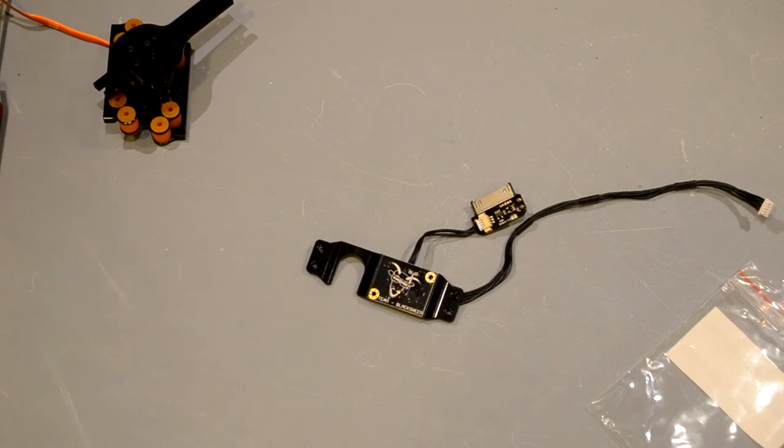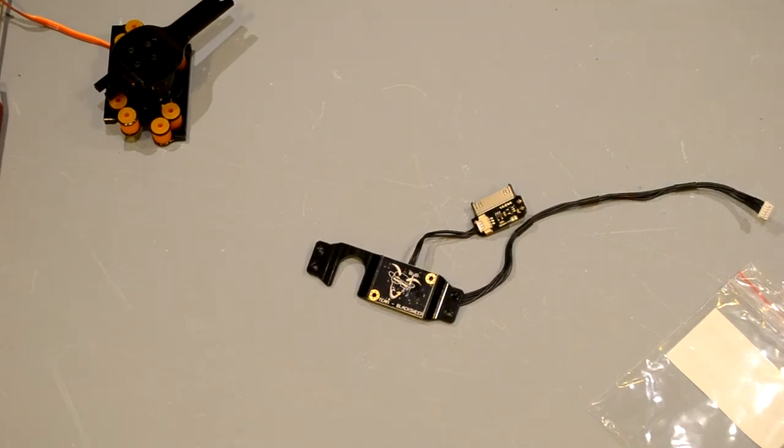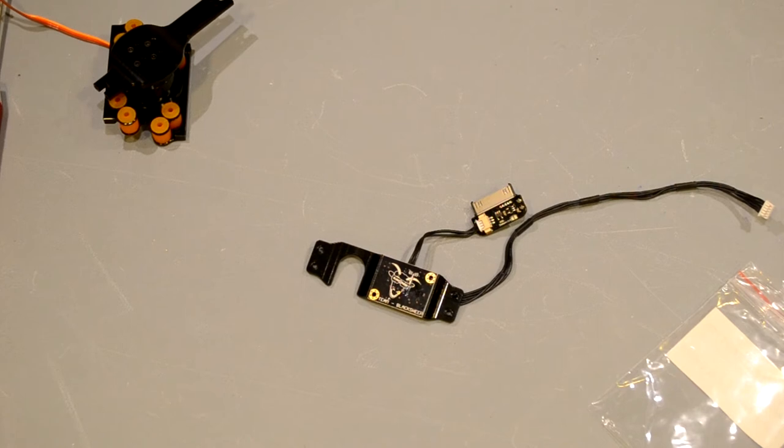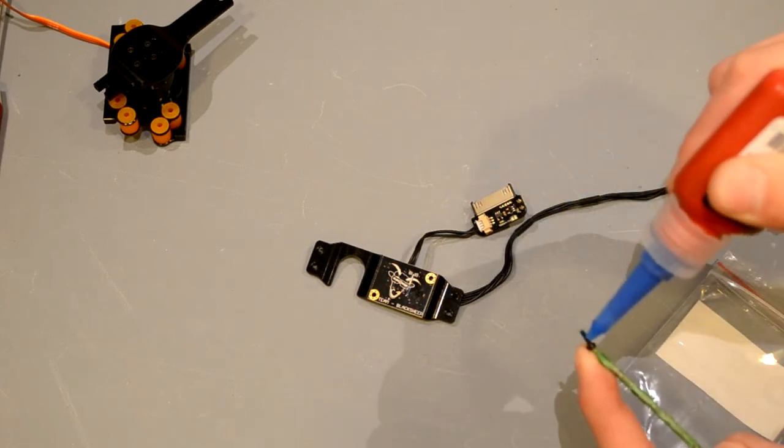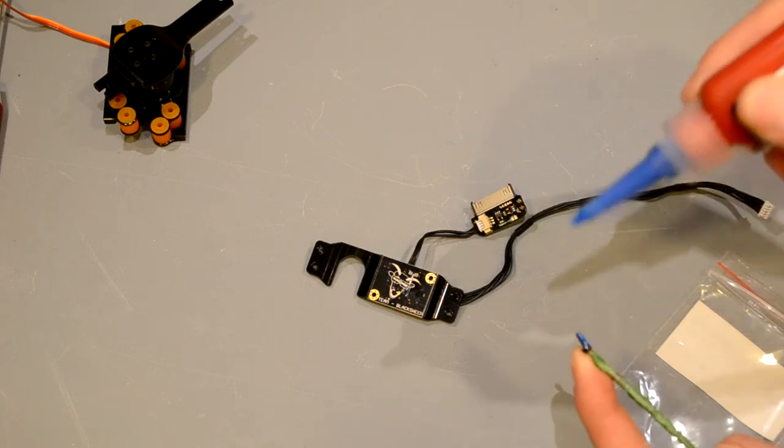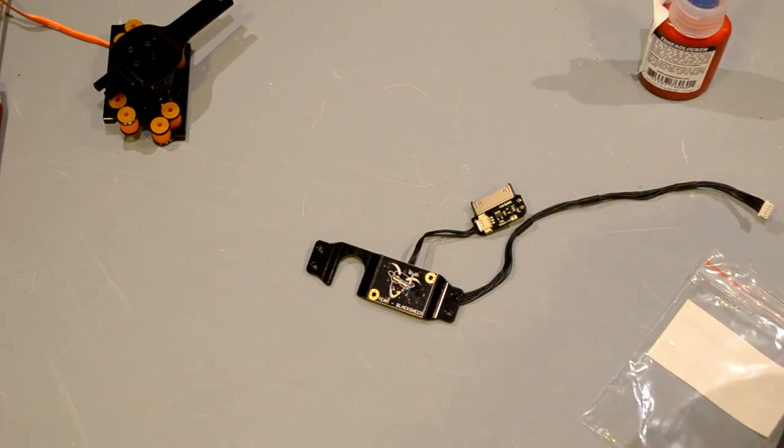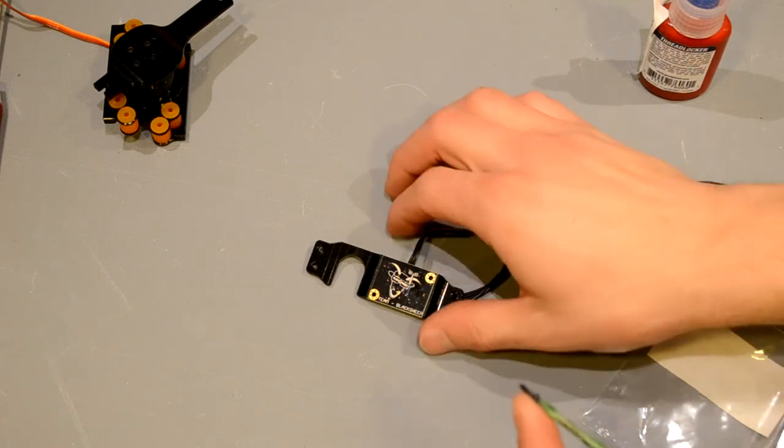Alright, so we're gonna mount the IMU to the top of the gimbal frame. Using some of the included two and a half millimeter by six millimeter hex screws. Just go ahead and give a drop there. Always, always, always thread lock any metal to metal connection. Okay, and with the 1.5 millimeter hex driver covered in green mystery gunk. We're just gonna screw all of that in place.